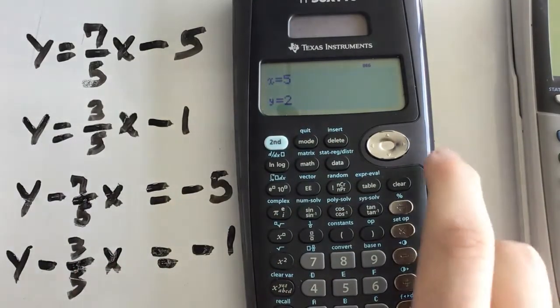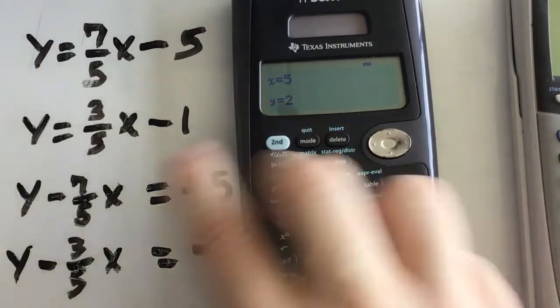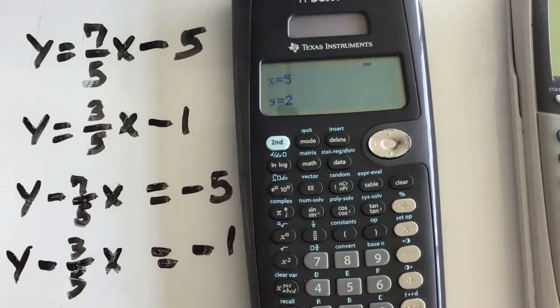So now I hit solve. And bam, there's my solution. When X is 5 and Y is 2, these two equations are equal. So thus I solved the system. I found the point where the two are the same.